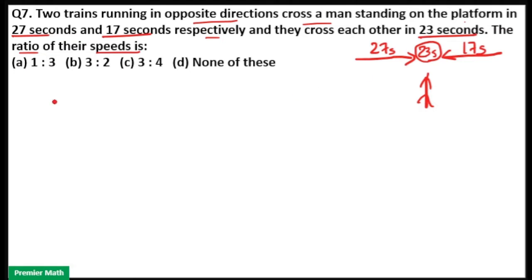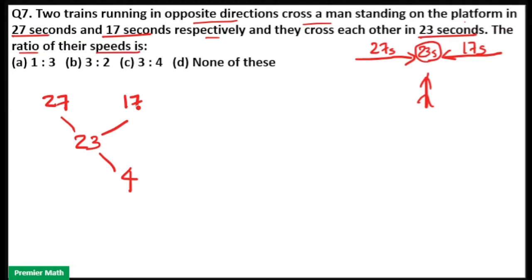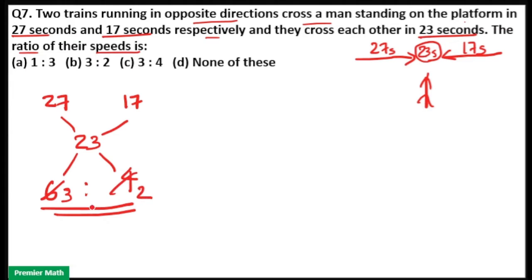Using the allegation method: first train crosses the man in 27 seconds, second train crosses the man in 17 seconds, and both trains cross each other in 23 seconds. Then 27 minus 23 is equal to 4, and 23 minus 17 is equal to 6. So 6 is to 4, meaning 2×3 is 6 and 2×2 is 4, giving a ratio of 3 is to 2. Option B is your answer.